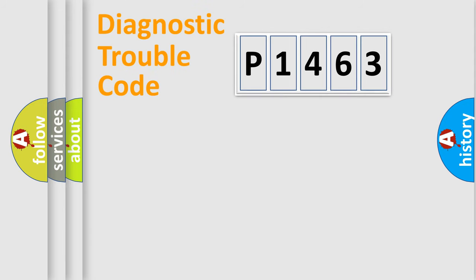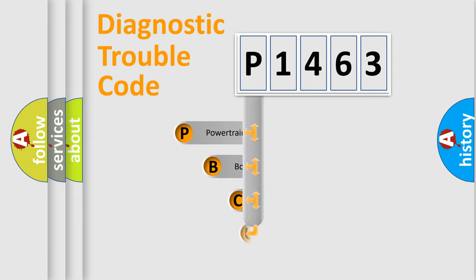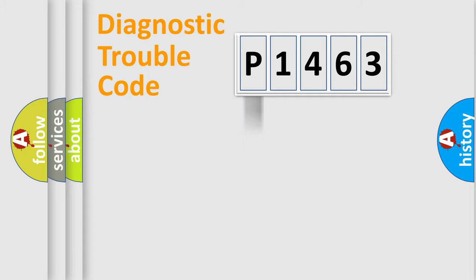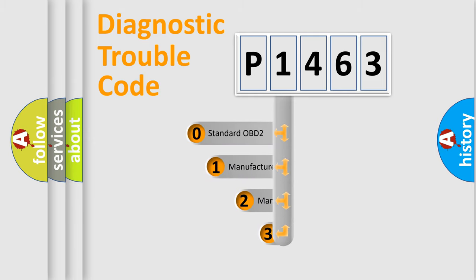Let's do this. First, let's look at the history of diagnostic fault code composition according to the OBD2 protocol, which is unified for all automakers since 2000. We divide the electric system of the automobile into four basic units: Powertrain, Body, Chassis, and Network. This distribution is defined in the first character of the code.